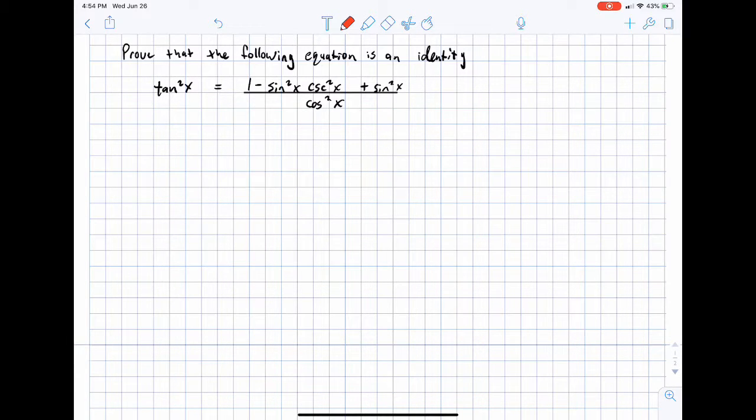Next example, let's verify that the tangent squared of x is equal to 1 minus sine squared of x cosecant squared of x plus the sine squared of x all over the cosine squared of x.